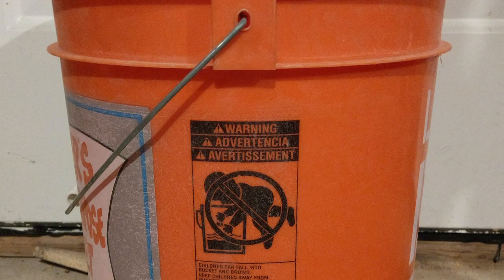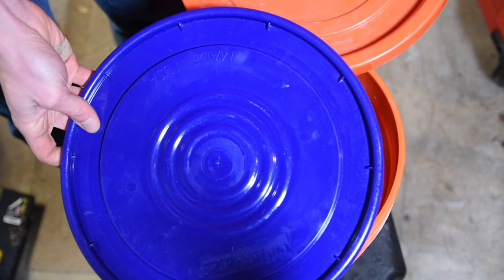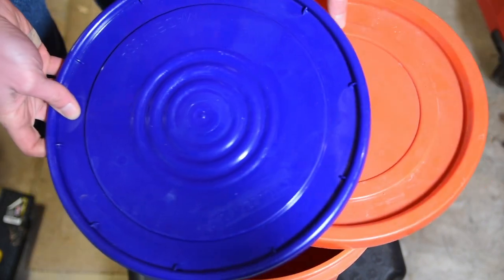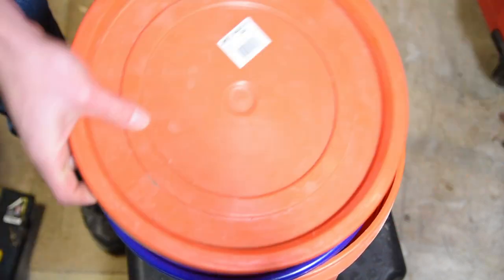To start off, you're going to need a standard 5-gallon bucket, and it doesn't have to be new. So if you're debating between the blue hardware store and the orange one, consider the bucket lids. The blue one is flexible and will bend under the pressure of the vacuum, which is why I suggest the orange one.